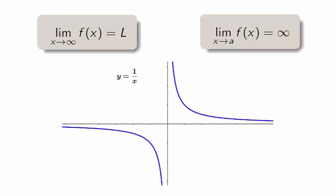For example, the inverse function y equals 1 over x has limit 0 when x approaches positive or negative infinity. It has limit positive infinity when x approaches 0 from the right and negative infinity when x approaches 0 from the left.